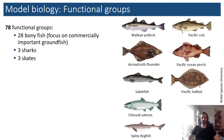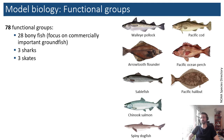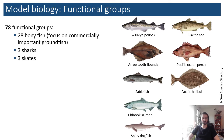For the model biology, we are capturing 78 functional groups. The big focus is on groundfish. We have 28 bony fish groups, many of which are single-species groups for commercially important species such as Alaska Pollock, Pacific Cod, Arrowtooth Flounder, Halibut, and so on. We have three shark groups, three skate groups, and then some more highly aggregated fish groups where we lose a little resolution, as is common in Atlantis.